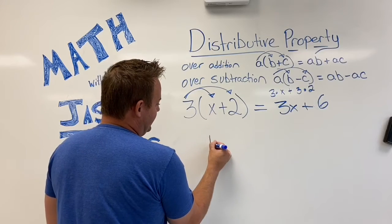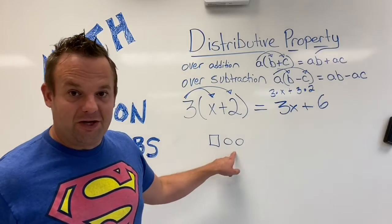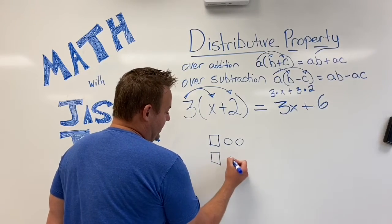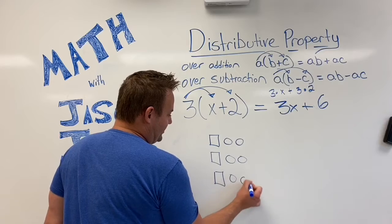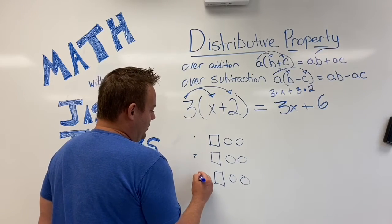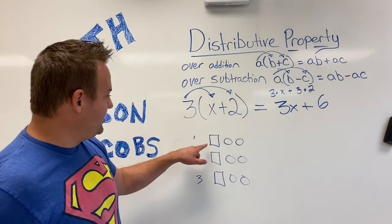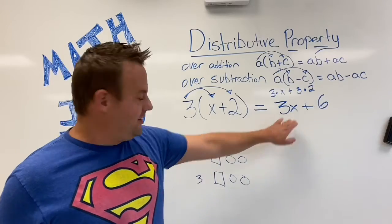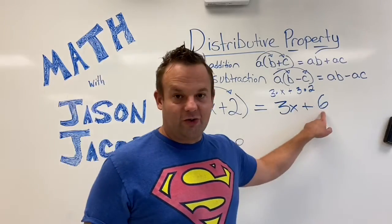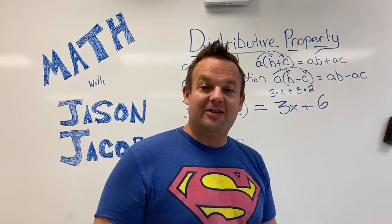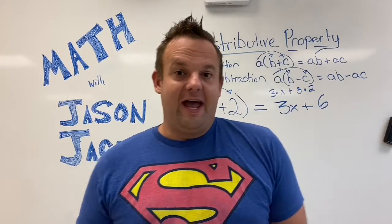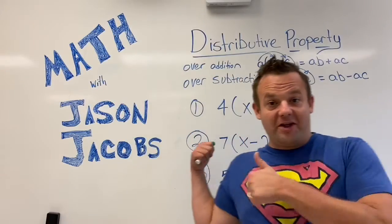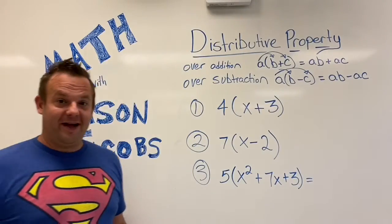So X plus 2 — this is X plus 2. How many of these X plus 2s do I have? I have 3. So watch this: X plus 2, and another X plus 2 — I have 3 copies of X plus 2. Notice: X plus 2, three times, equals 1, 2, 3 Xs and 6 circles. So that's a model of it. Get out a paper and pencil — I'm going to give you three problems to do for your distributive property lesson today. Pause the video and do it.